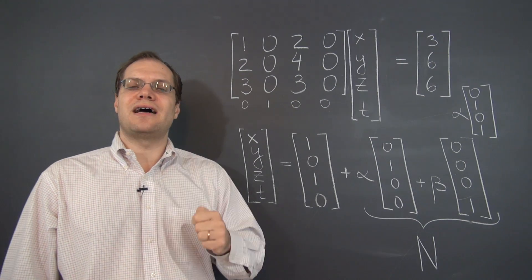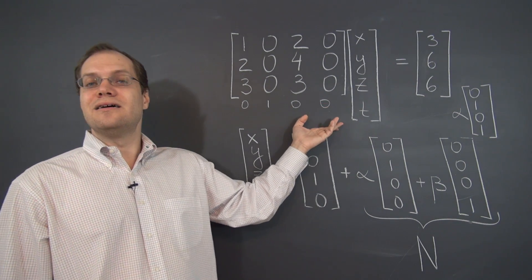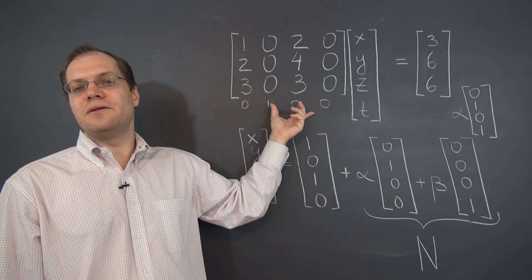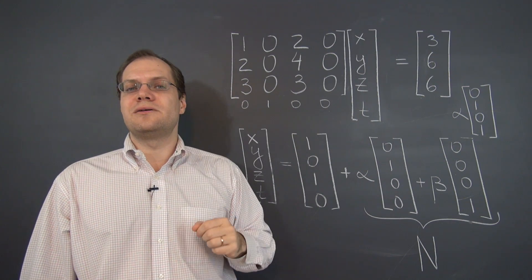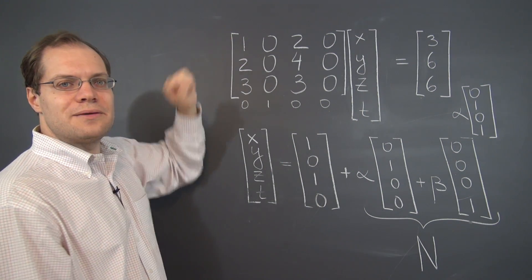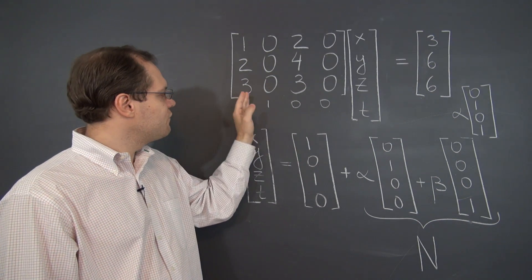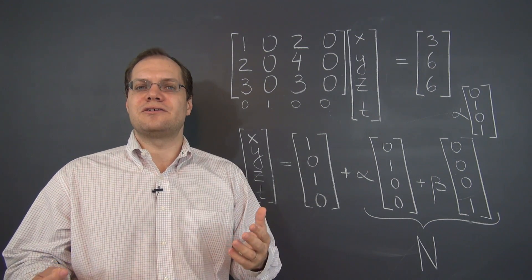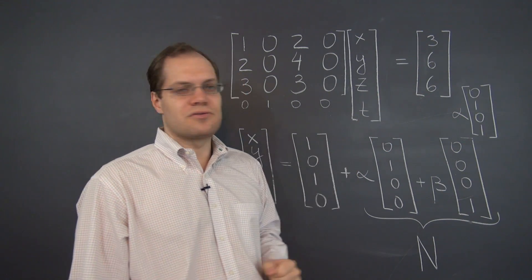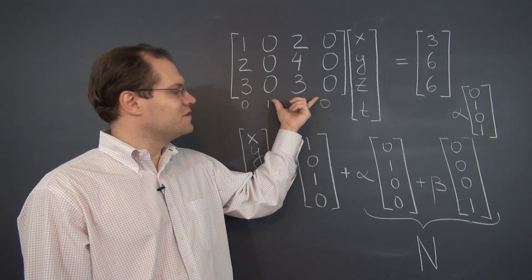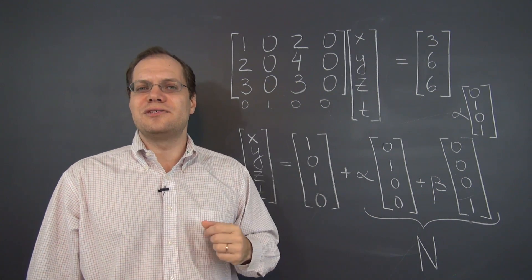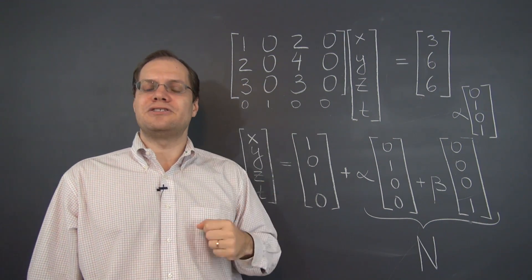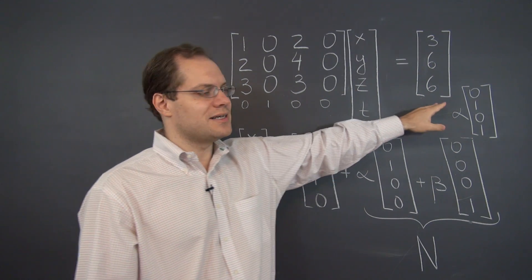Now I also want to ask a question that I've asked in a couple of previous problems. Did we get lucky that the right-hand side was in the column space of the matrix? Well, let's do a simple count. The system lives in a three-dimensional space, R3. And we have four vectors in the three-dimensional space. So by simple count, we have plenty of vectors to decompose the right-hand side. On the other hand, two of the vectors are zero and therefore completely useless. So in fact, we have only two vectors in a three-dimensional space to represent the right-hand side.